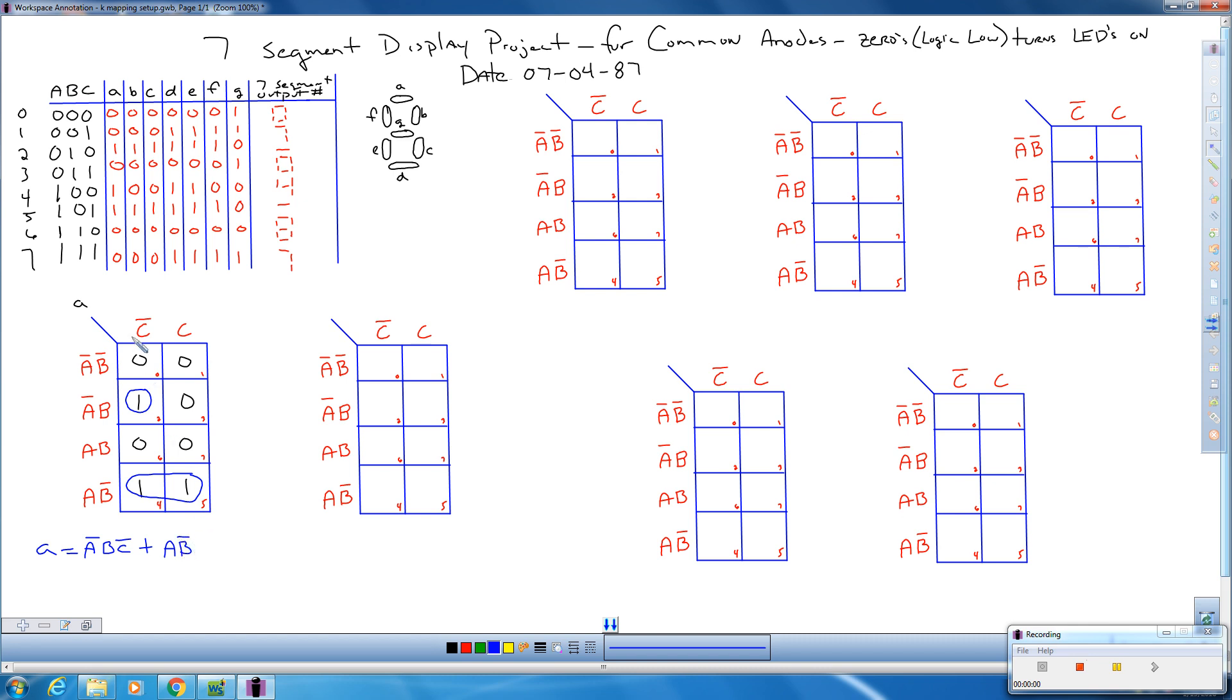Okay, so remember from K-mapping, we get a 1, whether it's C bar or C, but it has to be A, B bar. So this is our segment A. This is our final circuit for it. So that's what we're going to draw up. And this is the output that's going to go into segment A on our seven-segment display when we breadboard this up. Let's take a look at the next segment here.